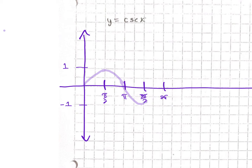I would suggest either a dotted line or something just to make it a little bit different, or else just very lightly draw it in there, and then bold the other part of the graph to show that this is the actual graph. So this is just to help us with creating the graph.